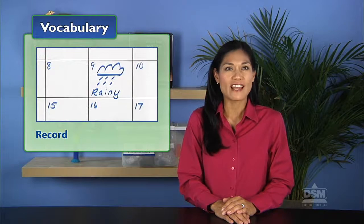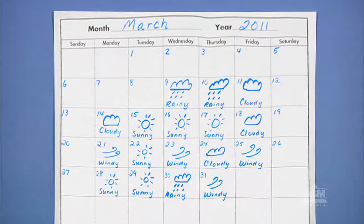Inform the class that they will record weather every day and take turns observing and recording the weather on the calendar each day throughout the year. Save the calendar sheets for each month so that you can display them in sequence and compare weather in different seasons.